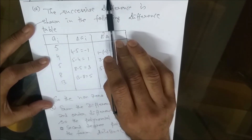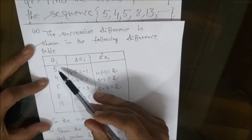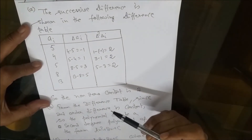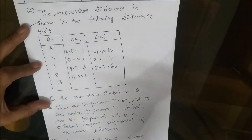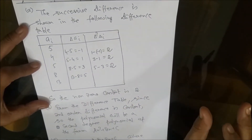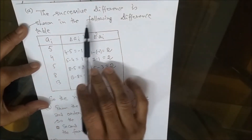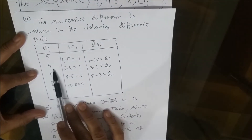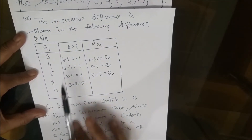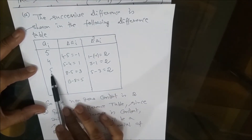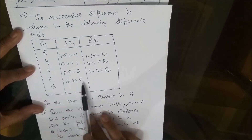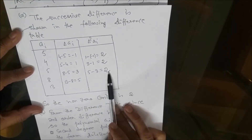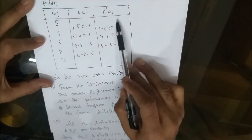The given sequence is 5, 4, 5, 8, 13, 30. Since it is hinted that it may be a polynomial, we find the successive differences. First order differences: 4−5=−1, 5−4=1, 8−5=3, 13−8=5. Second order differences: 1−(−1)=2, 3−1=2, 5−3=2. The second order difference is constant.